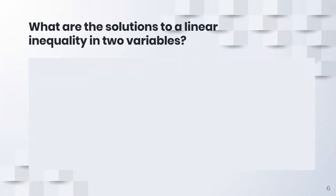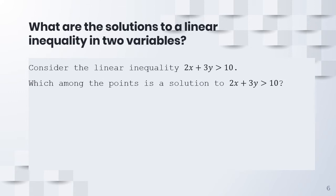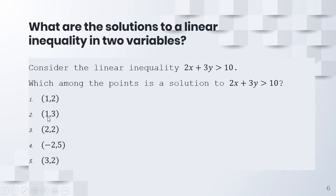Now, when do we say that something is a solution to a linear inequality in two variables? Let's consider the linear inequality 2x plus 3y is greater than 10. Which among the points is a solution to this inequality? I have here five points: (1,2), (1,3), (2,2), (−2,5), and (3,2). To check whether these points are solutions, we substitute the values into x and y.